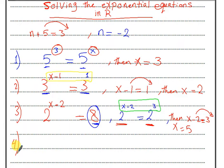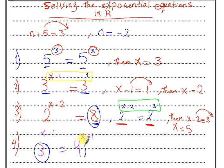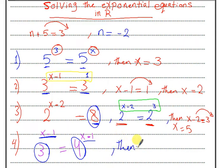Exercise 4: if we have different bases — for example x minus 1 equal 4 to the power x minus 1 — we have different bases. So the power will equal 0: x minus 1 equal 0, so x equal 1.